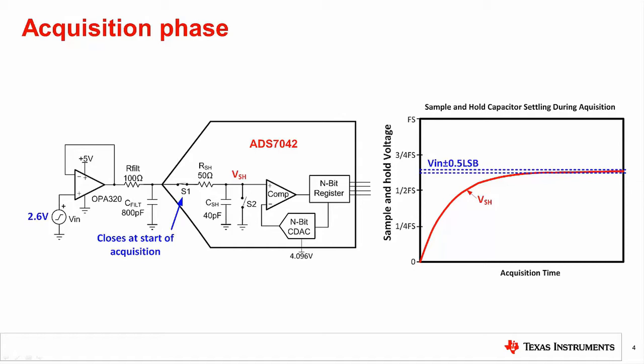Depending on the conversion rate, the acquisition time may be very short. For example, a one-megasample-per-second converter acquisition phase might be 300 nanoseconds. Because this acquisition may be very short, it is often necessary to use wide-bandwidth amplifiers to achieve the desired accuracy. Also, selecting the correct external RC charge bucket circuit has a significant impact on settling. The goal of this presentation is to develop a method for selecting the appropriate bandwidth amplifier and the best values for the RC charge bucket filter.